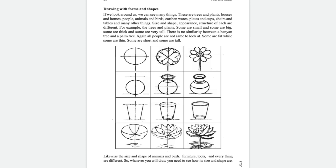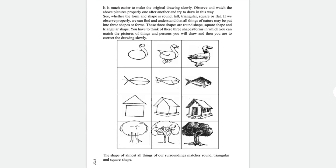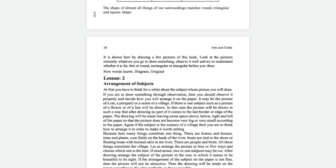So whatever we draw, we have to see how its size and shape are. When I draw any picture, firstly observe and watch properly one after another — then it is much easier to make the original drawing. We can find that all things in nature may be put into three shapes or forms: round shape (circle), square shape, and triangular shape. We match these shapes with our drawing ideas and then correct the drawing.